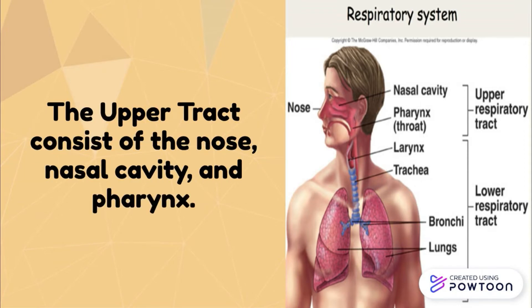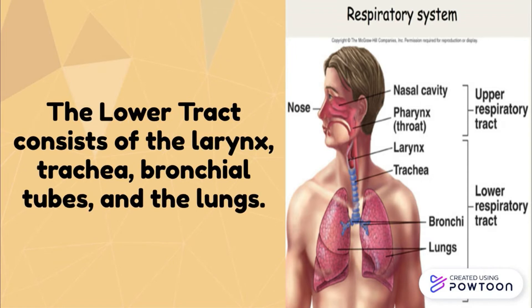The upper tract consists of the nose, nasal cavity, and pharynx. The lower tract consists of the larynx, trachea, bronchial tubes, and the lungs.